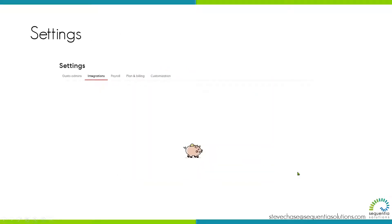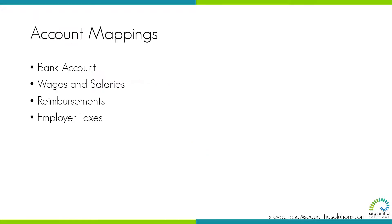After you're connected, you'll then have the ability to set up your integrations. The four things you need to know about are your chart of accounts in QuickBooks Online. You'll use your bank account that you pay payroll from. You'll have a wages and salaries account — Gusto will true up your gross wages here. Reimbursement is optional, but just have some kind of reimbursement expense account in case you do have that for your employees. And then employer taxes should be set on that.